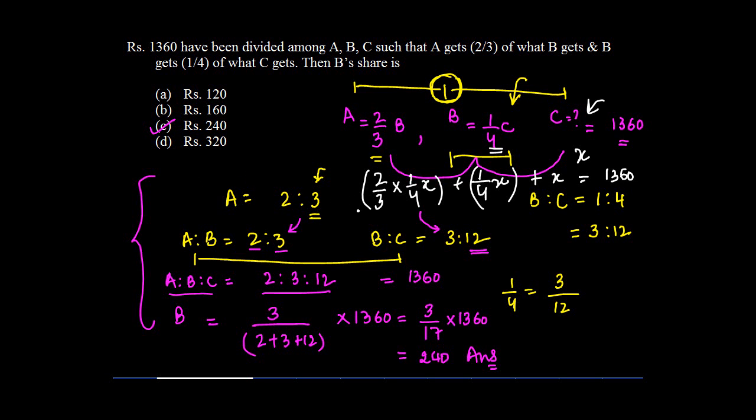But by applying the ratio method, where we just converted the ratio of B in the same form as we have the ratio of B over here. So 2:3 is to 3:12. We can easily find out what is the ratio of these 3 people involved.